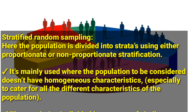Another technique is called stratified random sampling. Here the population is divided into strata using either proportionate or non-proportionate stratification. It is mainly used where the population does not have homogeneous characteristics — that is, where the population does not share the same or similar characteristics.